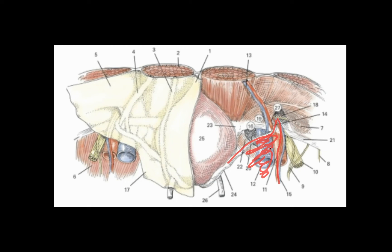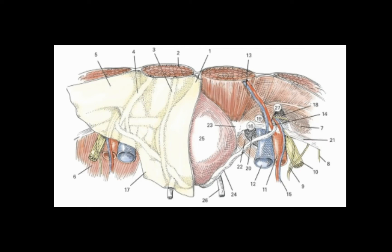The triangle of doom contains large blood vessels directly underneath. The triangle of pain is just lateral to that, bounded by the gonadal vessels and the inguinal ligament. Multiple nerves pass through this space — most importantly the lateral cutaneous nerve — and damaging them with a tack can cause pain in that nerve distribution.